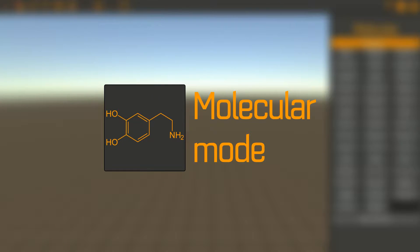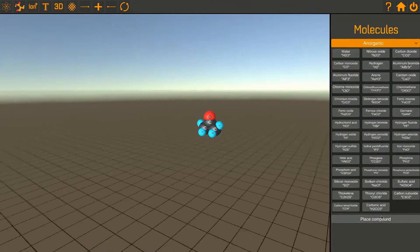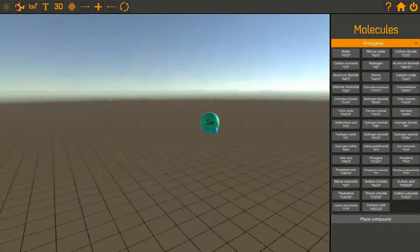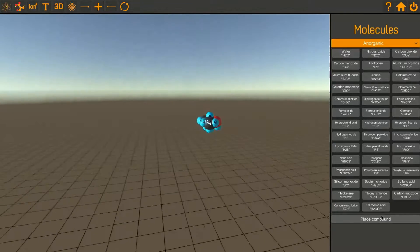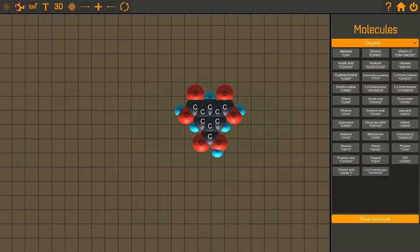First, there's a molecular mode. Here you can easily visualize many pre-built molecules like water, methylamine, or acetone, as well as 2D molecules like trimesic acid.